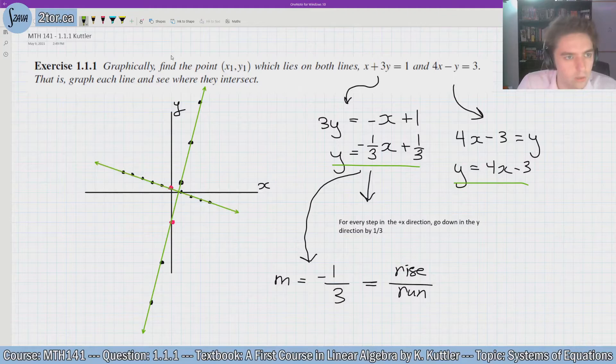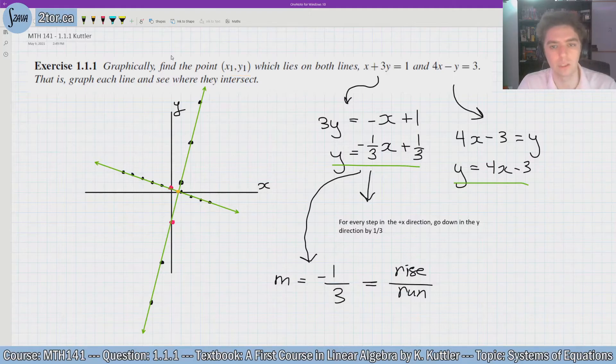So graphically our lines intersect right there, at that point right there. I'll draw it in orange. So that point right there is the point (x₁, y₁) which lies on both lines.